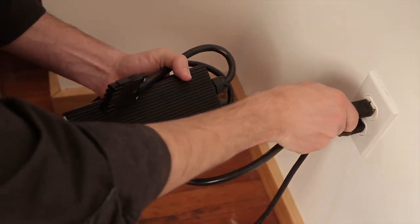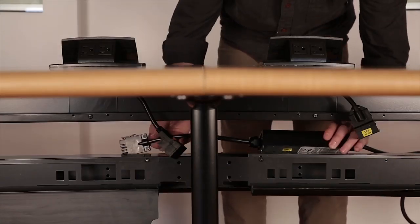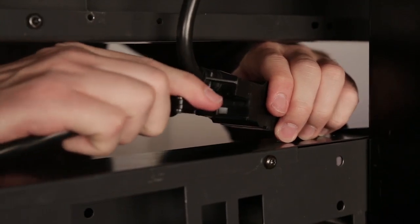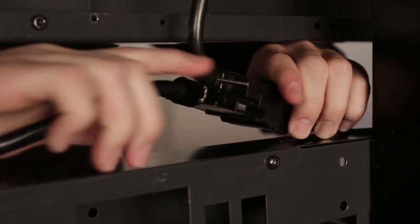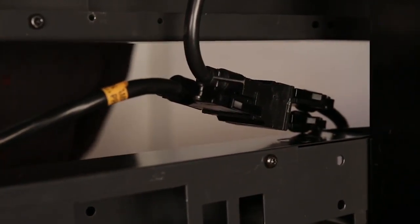The infeed can be placed anywhere along the module run. This is made possible because all the modules have three connection points allowing two jumpers and the infeed to be connected.